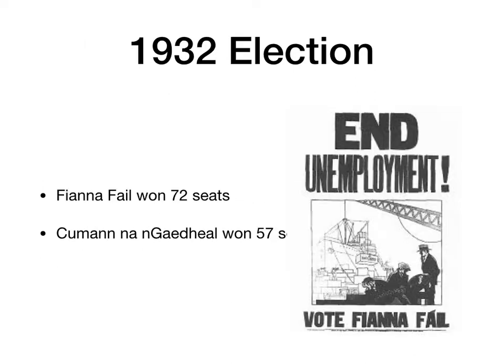As we saw at the end of our series of videos on Cumann na nGaedheal, in the 1932 election Fianna Fáil won power with 72 seats while Cumann na nGaedheal won 57 seats. Fianna Fáil was a party that had been founded by Eamon de Valera in 1926, and finally de Valera was back in charge of the country.